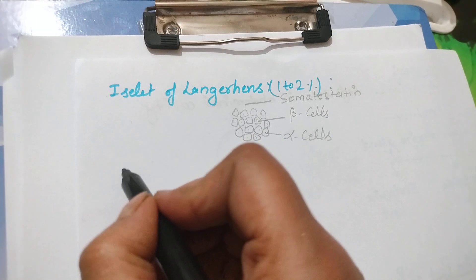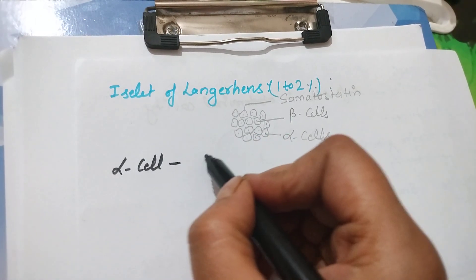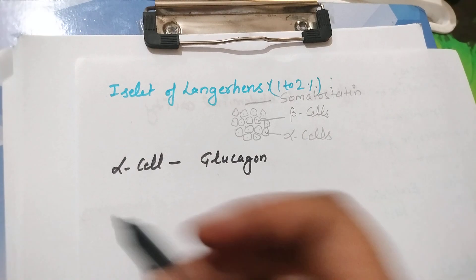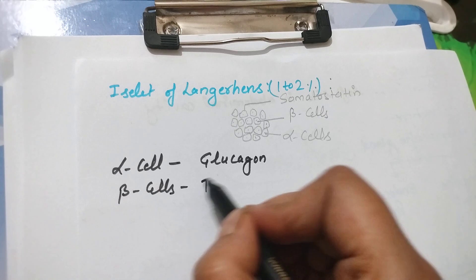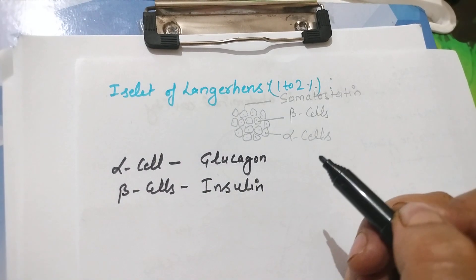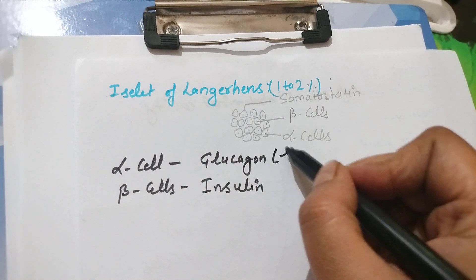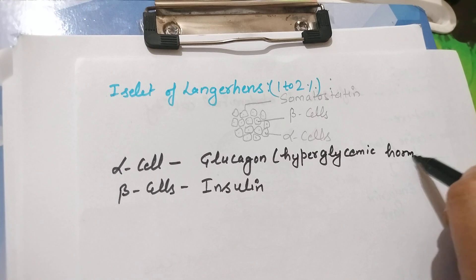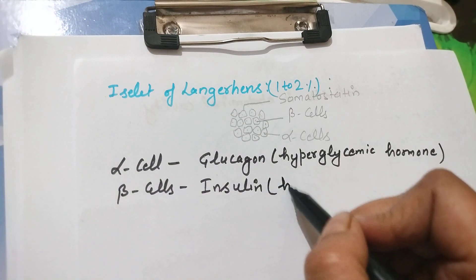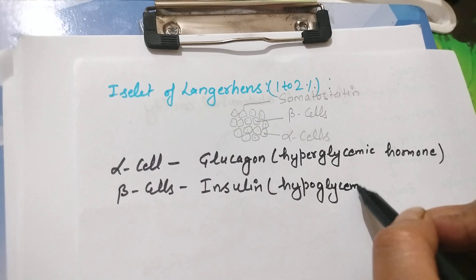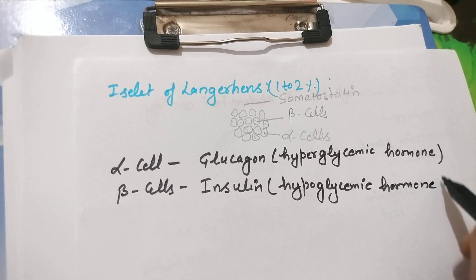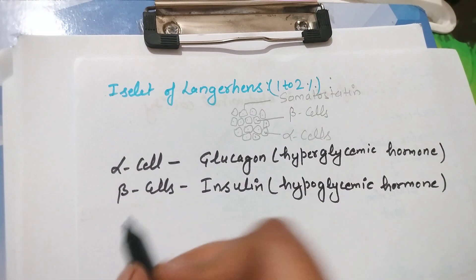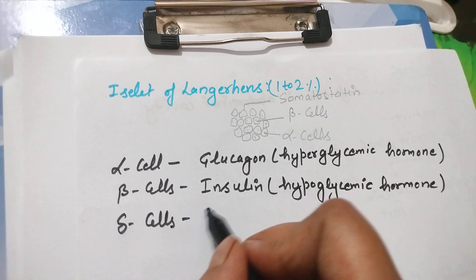Alpha cells of pancreas will secrete the hormone glucagon. Beta cells of pancreas will release insulin. Glucagon is a hyperglycemic hormone and insulin is a hypoglycemic hormone. The third type of cells are the delta cells and they will release somatostatin.